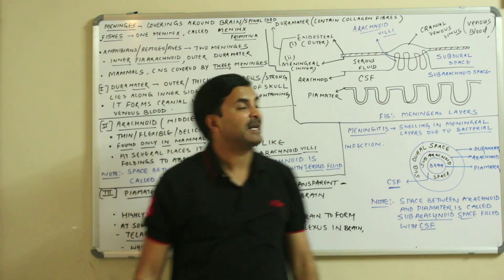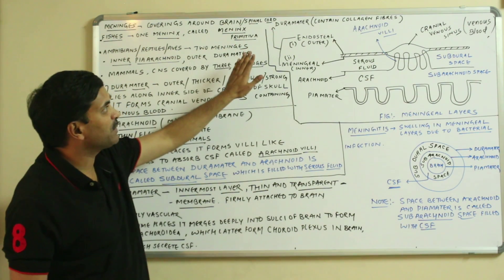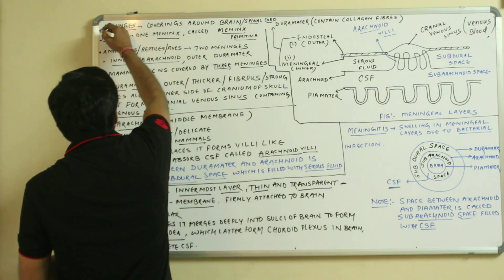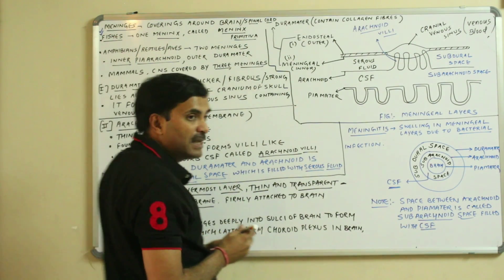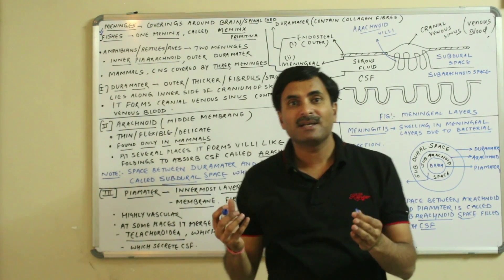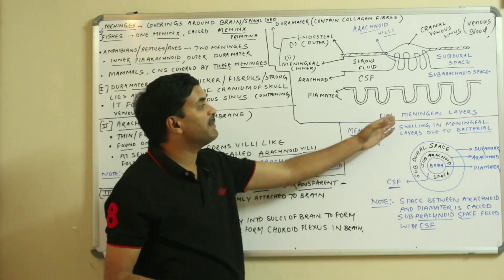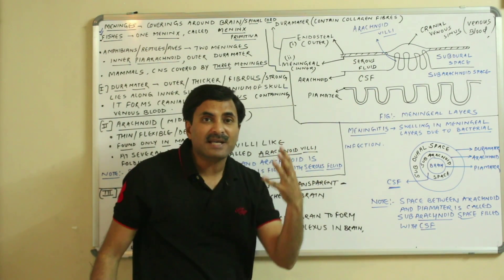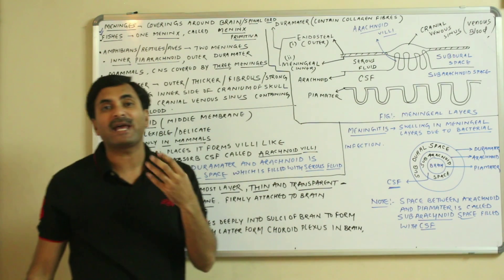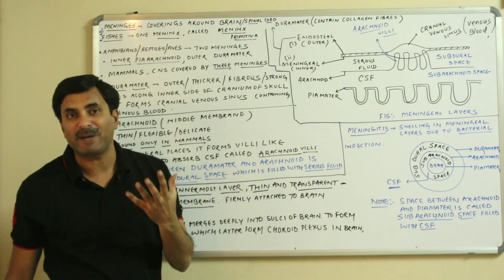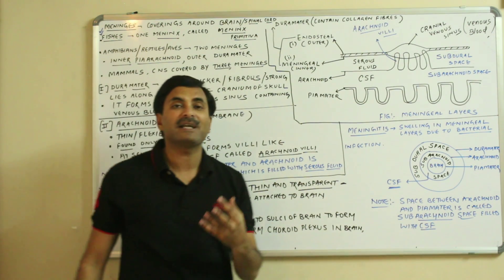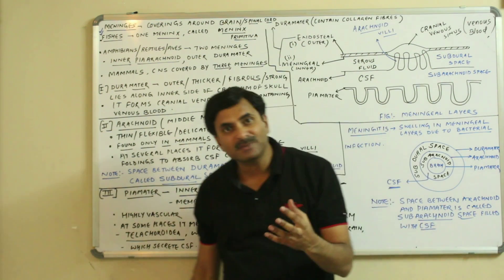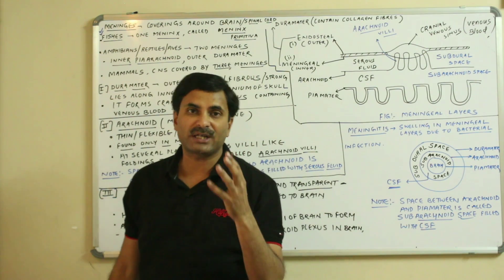Hello to all. We are discussing today a very important topic related to the brain, and that is known as the meninges. Meninges are also called meninx or meningeal layers. These are the coverings which are found around the brain or the spinal cord, which are parts of the central nervous system, and these are protective coverings.